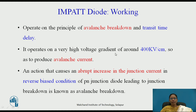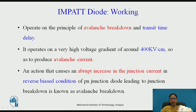The IMPATT diode operates at a very high voltage gradient, around 400 kilovolts per centimeter. When we provide such a high reverse bias that generates 400 kilovolts per centimeter, it produces avalanche current. Normal diodes break down in the avalanche region, but IMPATT diodes are formed in such a way that by adjusting the doping concentration, they will not break down; rather, they will produce avalanche current. This abrupt increase in junction current in the reverse bias condition is called avalanche breakdown.